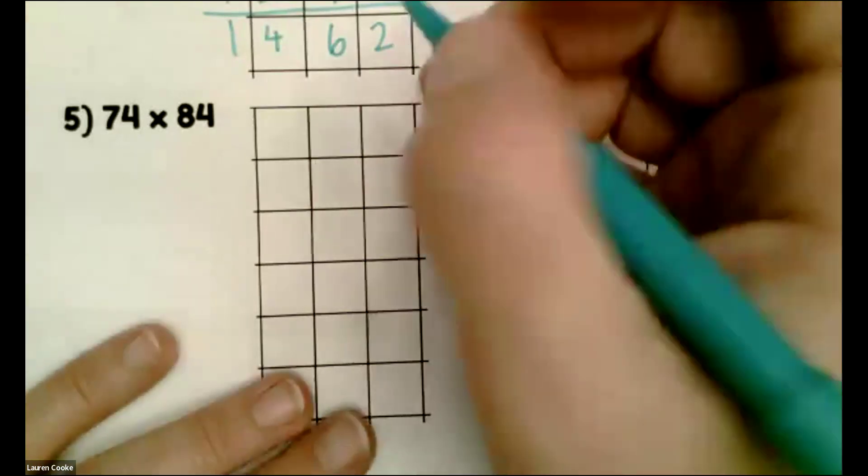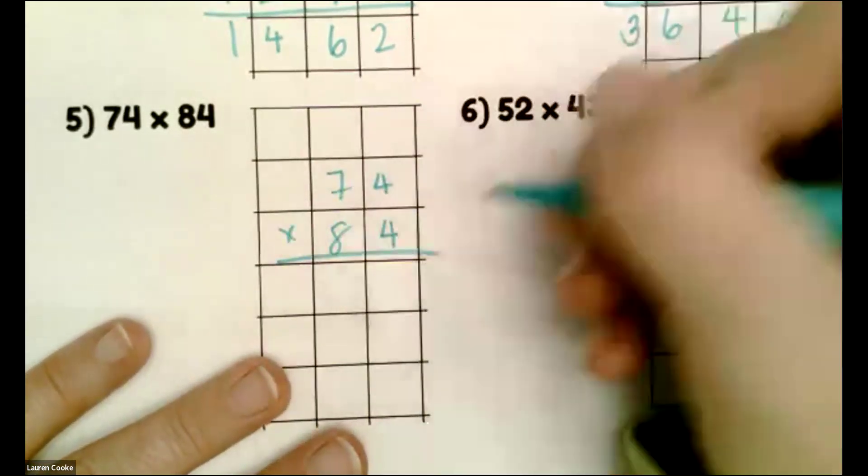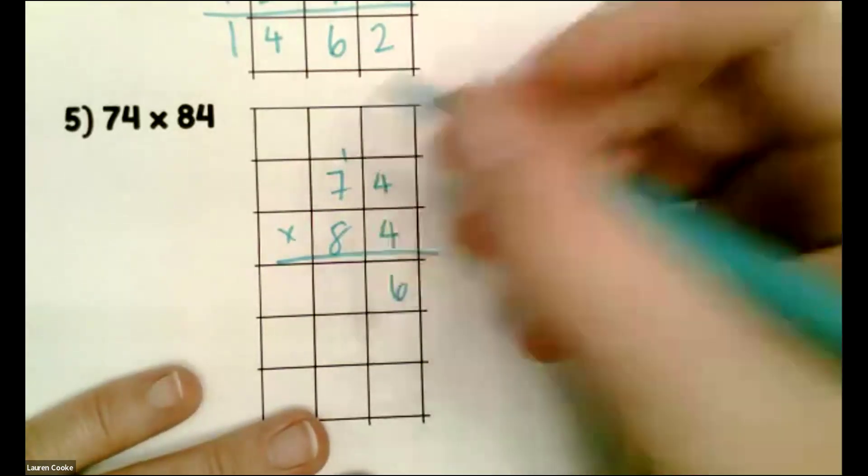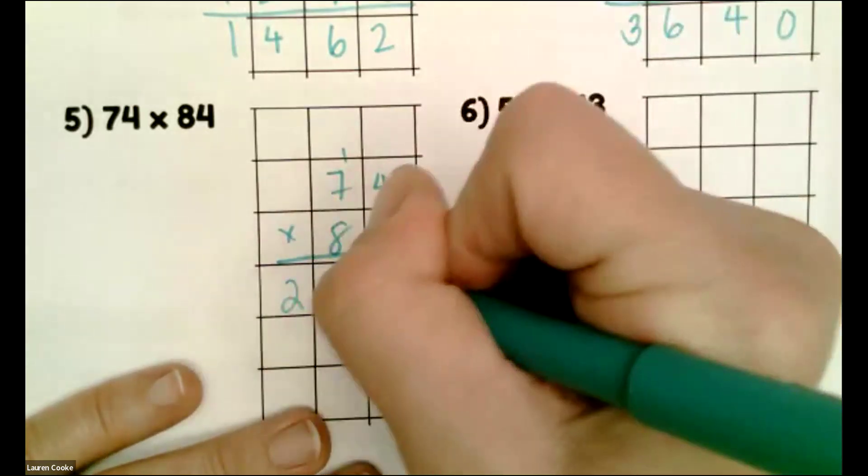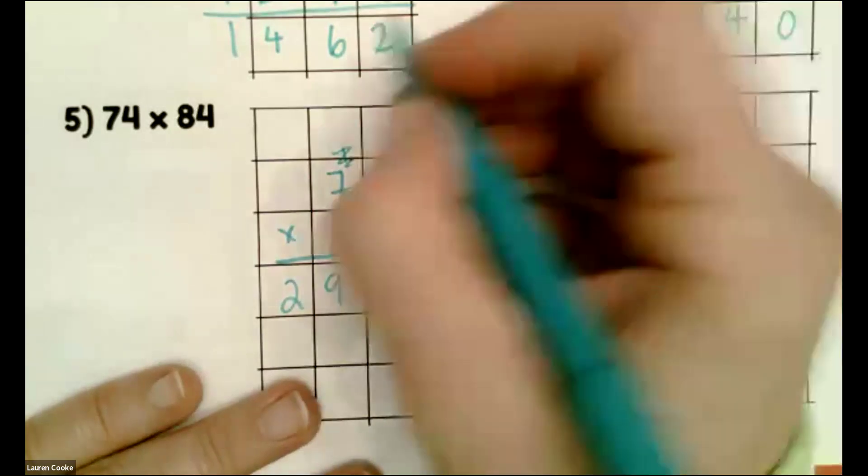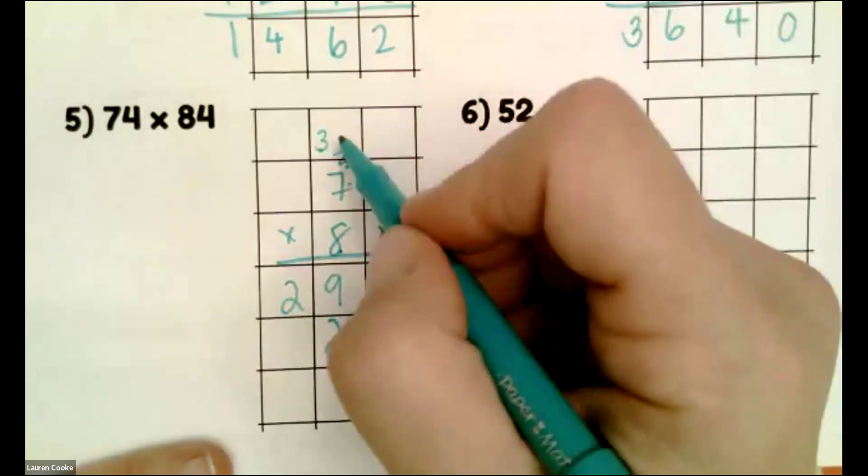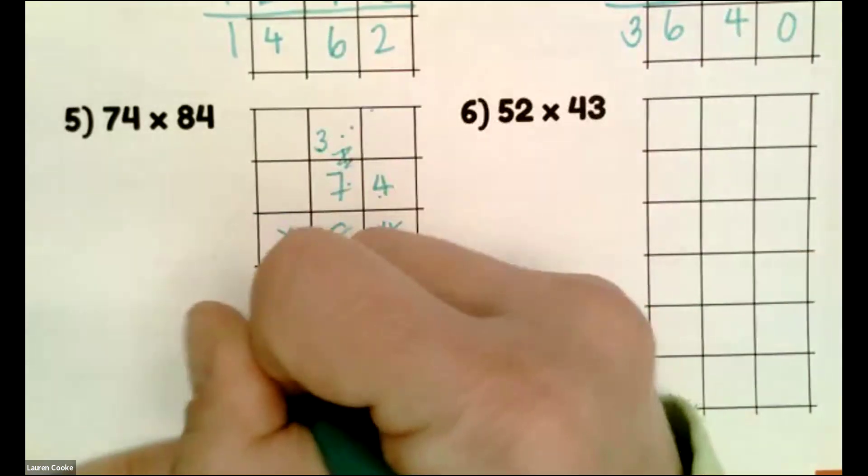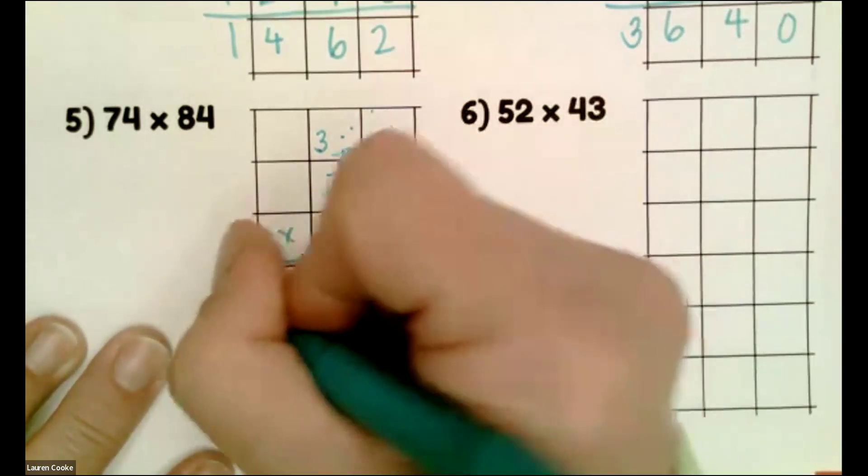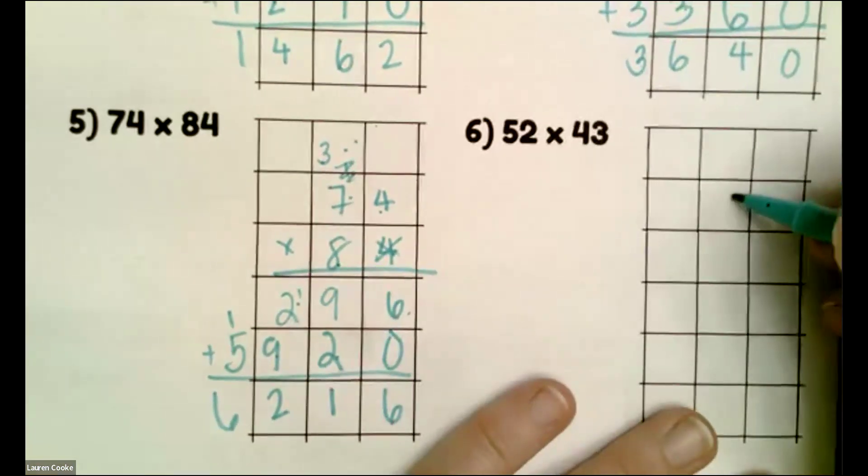Last two. 74 times 84, 74 sets of 84. I'm going to have 16, drop and bump. Four times seven is 28 plus one is 29. Done. Dust. Eight times four is 32. Drop, bump. Eight times seven, 56, 57, 58, 59. Add, six, 11, and 6,216.